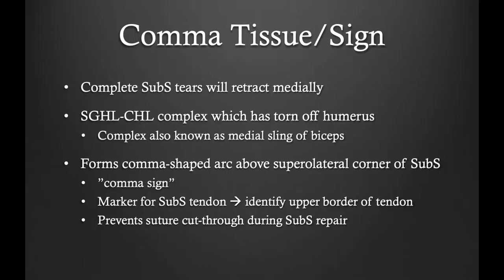Today we will be focusing on one of the hallmarks of a subscapularis tear which is called the comma sign. Complete subscapularis tears will retract medially. The comma sign is formed by the superior glenohumeral ligament and the coracohumeral ligament complex which is torn off the humerus. This piece of tissue is also known as the medial sling of the biceps which secures both the biceps tendon in the groove as well as the subscapularis tendon. When the subscapularis tears and retracts this complex of tissues forms a comma sign, which is a marker for the superior lateral border of the subscapularis tendon. It also is a firm piece of tissue which can be used and incorporated in the subscapularis repair.